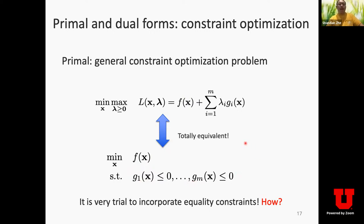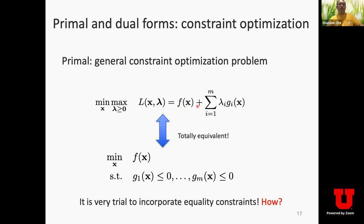We explained in the last lecture that such a general constraint optimization problem is equivalent to a minimax optimization problem. The objective for this minimax problem is the Lagrange function, which adds up the original objective function f(x) and a weighted summation of the constraint functions. The weight for each constraint function, lambda_i, is called a Lagrange multiplier — a term everyone in calculus has heard before. You can view it as an augmented function: the original objective augmented with a weighted summation of the constraint functions.